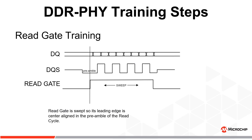Read gate training sweeps the read gate so only valid DQS strobes are passed through to the PHY. The PHY sweeps the read gate until a default pattern is detected, meaning it is now passing valid DQS strobes starting with the initial strobe of the read burst. The gate is then moved a half of a DQS cycle to the middle of the read cycle's preamble.